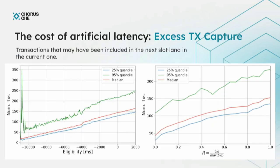The next negative externality is based on the same dynamic. As you delay your get-header request while playing timing games, the amount of transactions accruing to your slot increases in expectation. Another way of saying this: transactions that may have been included in subsequent slots actually land in the current timing-game slot. This is another description of the zero-sum dynamic — if you don't engage in timing games, it decreases the rewards you can expect as a validator.